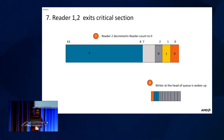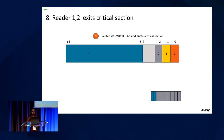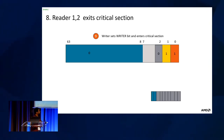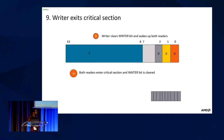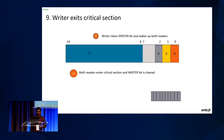When the first two readers leave the critical section they wake the writer. The writer updates the writer bit to indicate it is within the critical section and is removed from the queue. Because there are readers still in the queue, the waiter bit remains set. When the writer exits the critical section it wakes up both readers, and the waiter bit becomes zero because there are no entries left in the wait queue.